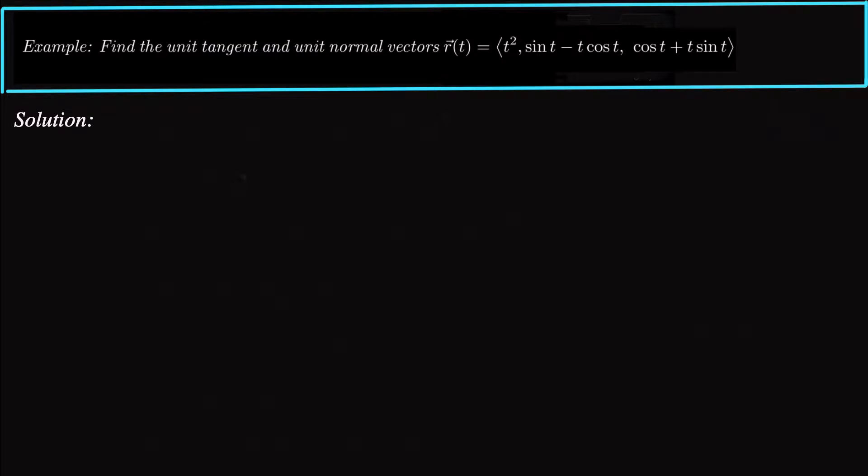Hey guys, what's up? Today we're looking at finding the unit tangent vector and the unit normal vector of a vector function. The vector function we have here is r of t equals t squared, sine t minus t cosine t, cosine t plus t sine t.